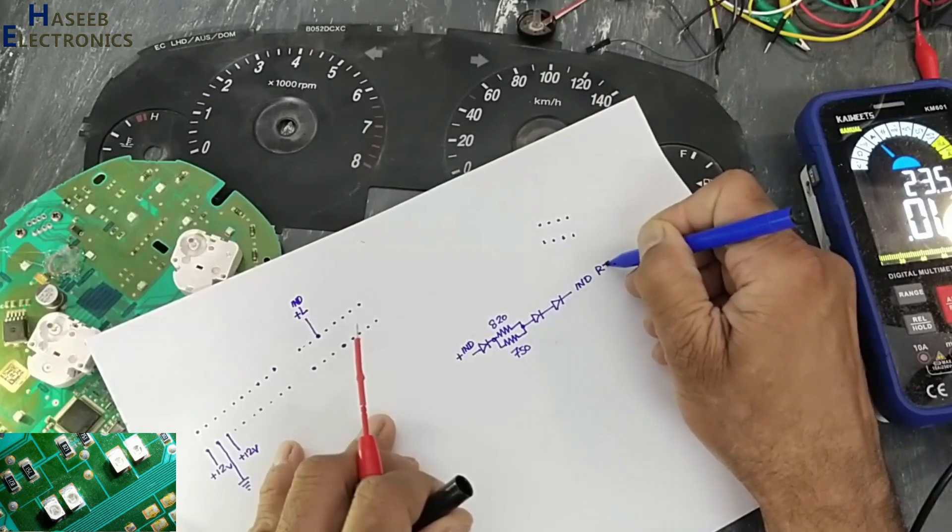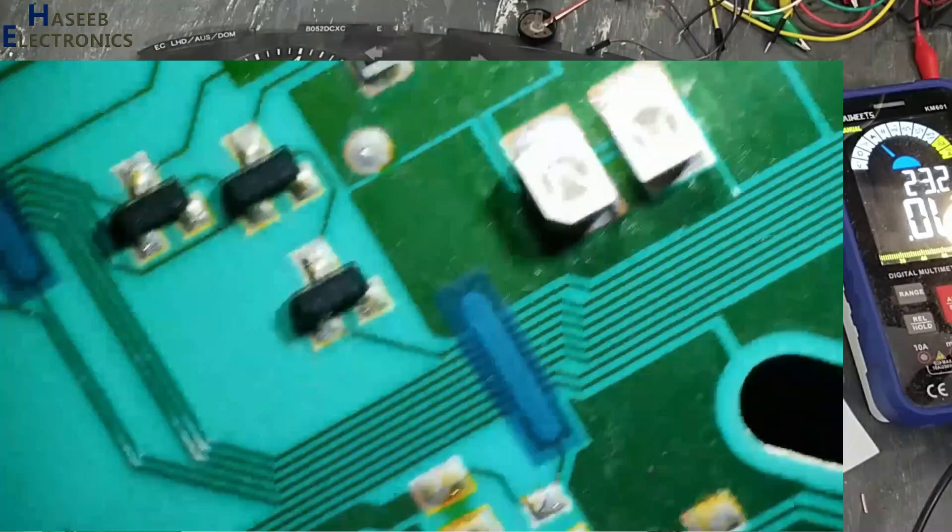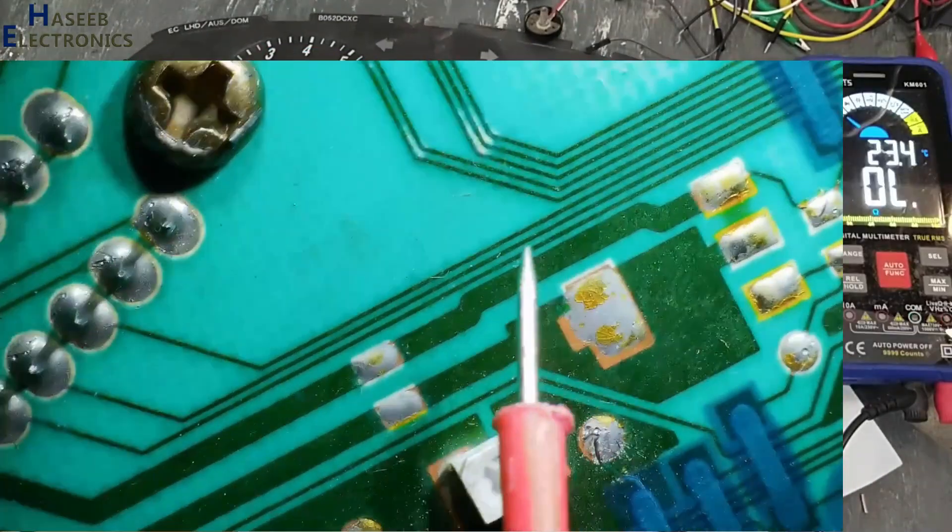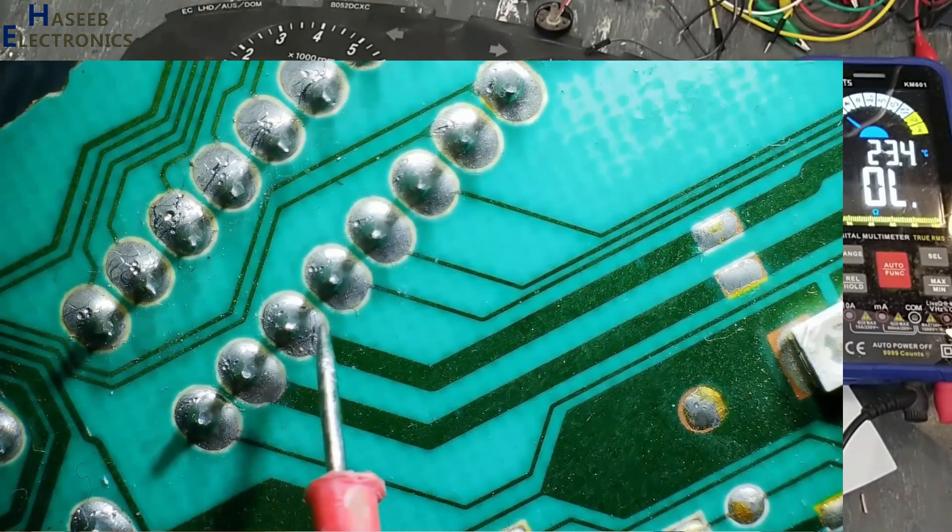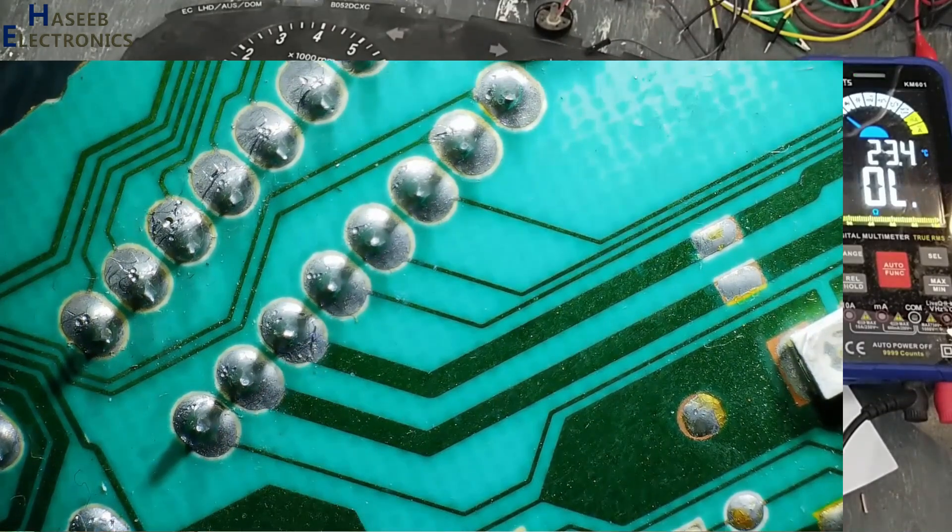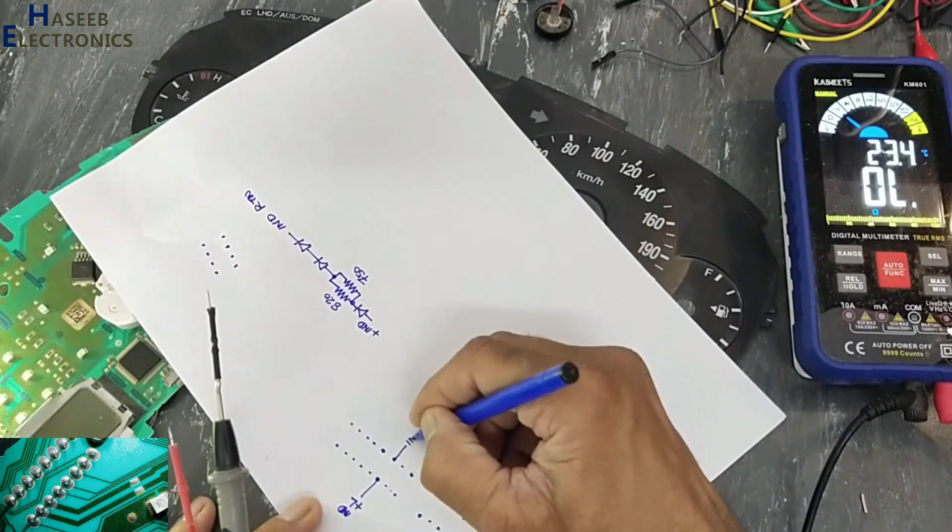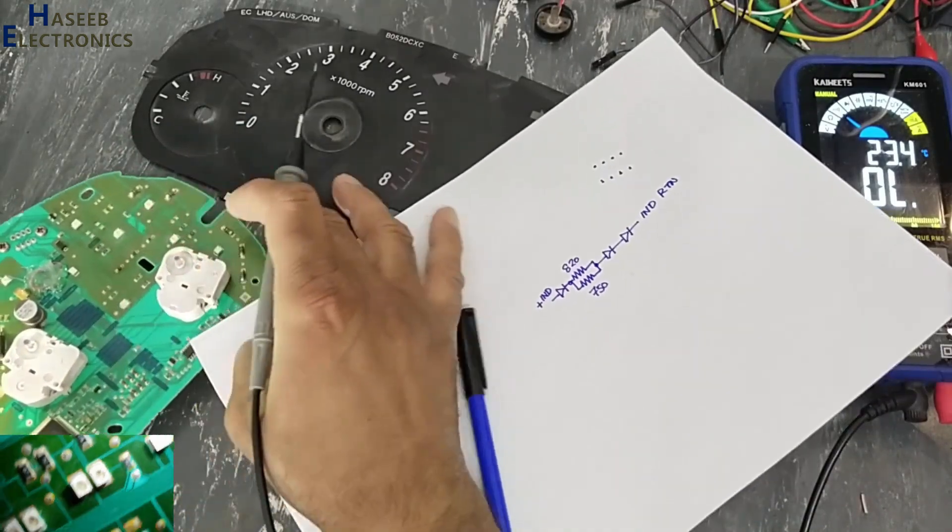Indicator return. Where is now indicator return? If we check this point, and this point, one, two, three, line number three. One, two, three. Now we will check the other side.